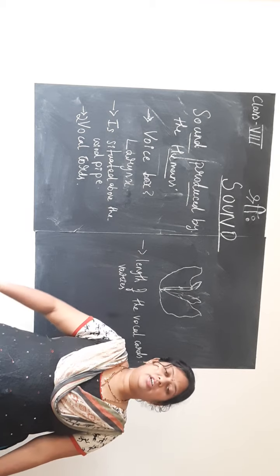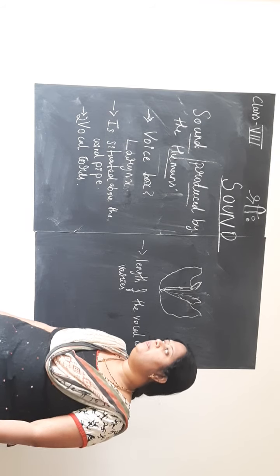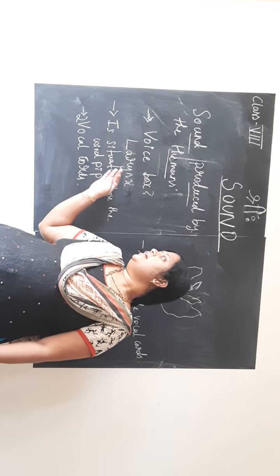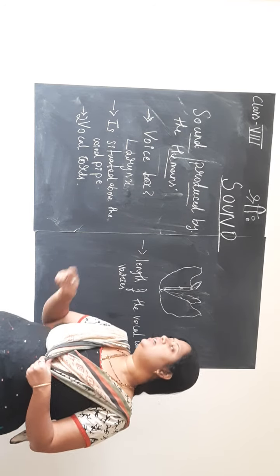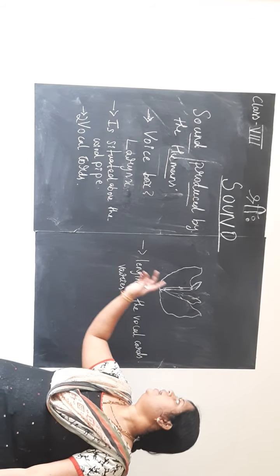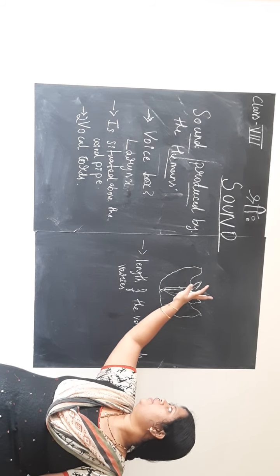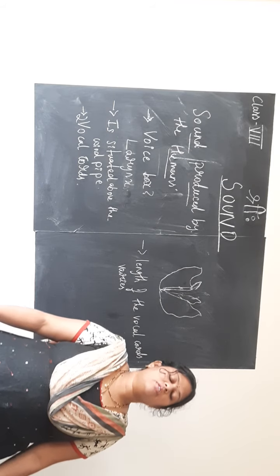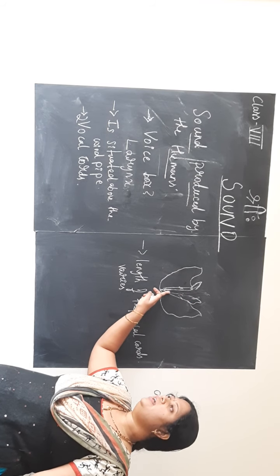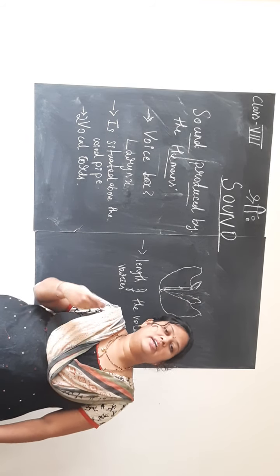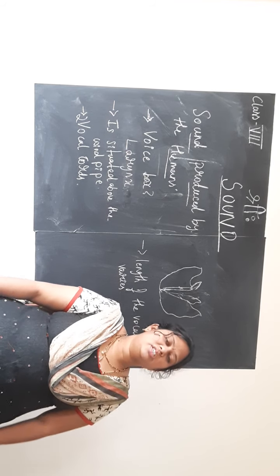This is about the sound produced by humans. Humans have the voice box or larynx which helps in production of sound. The larynx or voice box is situated above the windpipe, and there are two vocal cords stretched across the larynx with a gap in between them. Whenever we talk or make some sound, we let in air; the lungs pass the air through it, which in turn vibrates the vocal cords and hence sound is produced. You can sense this by holding your hand in the throat region when you make some sound.